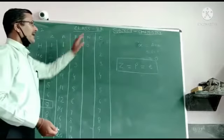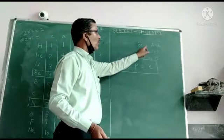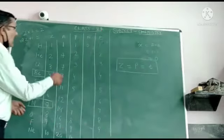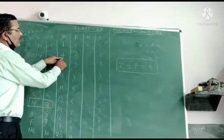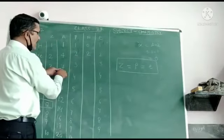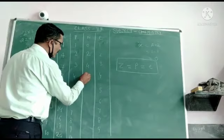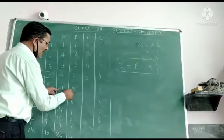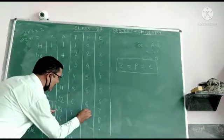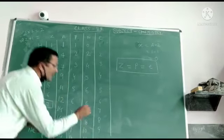Now, finding the number of neutrons. Neutrons equal A minus Z, meaning mass number minus atomic number. For helium: 4 minus 2 equals 2. For lithium: 7 minus 3 equals 4. For beryllium: 9 minus 4 equals 5. For boron: 11 minus 5 equals 6. For carbon: 12 minus 6 equals 6. For nitrogen you get 7, for oxygen you get 8, for fluorine you get 10, and for neon you get 10.